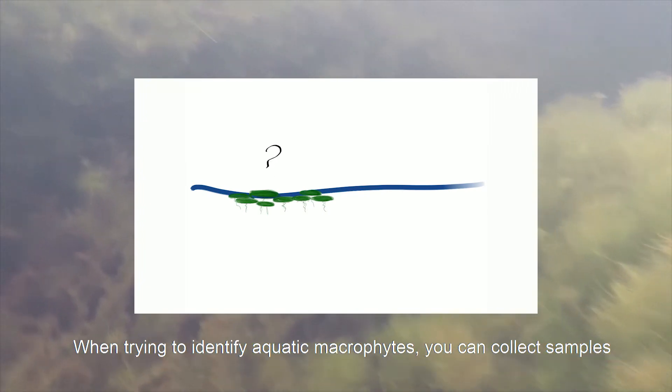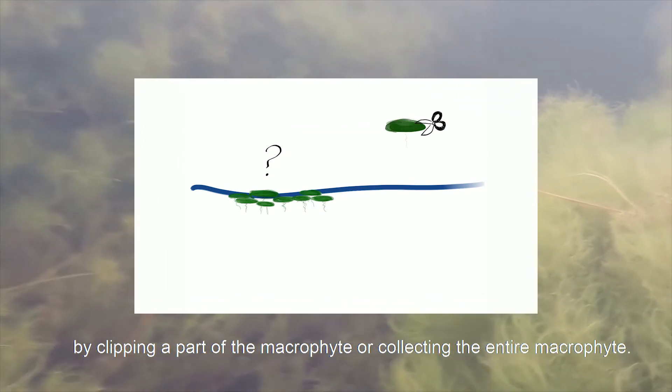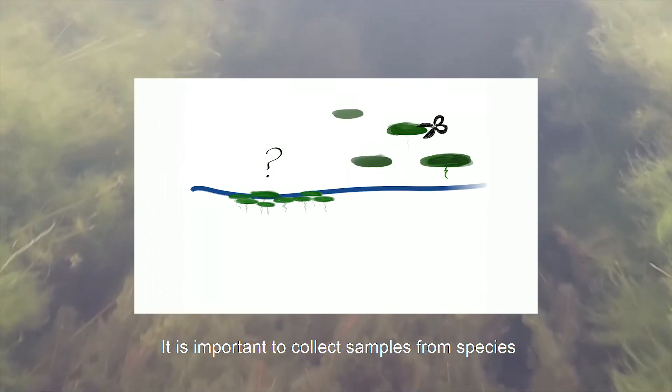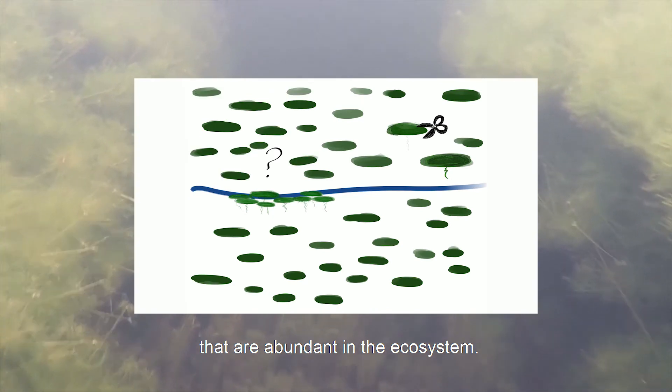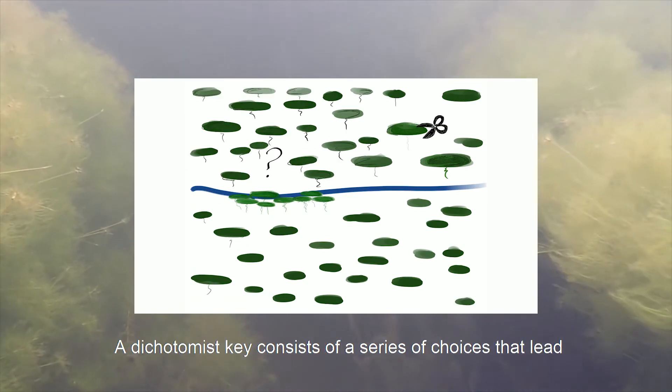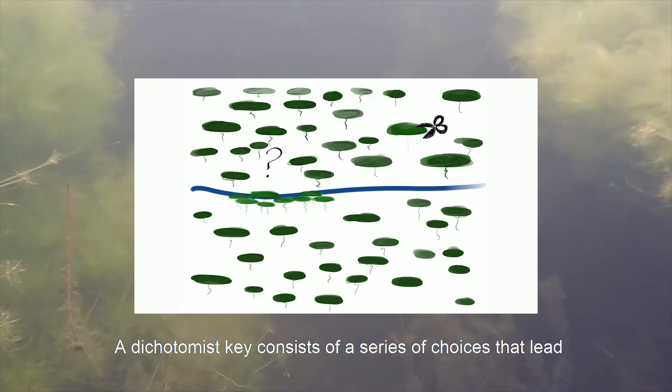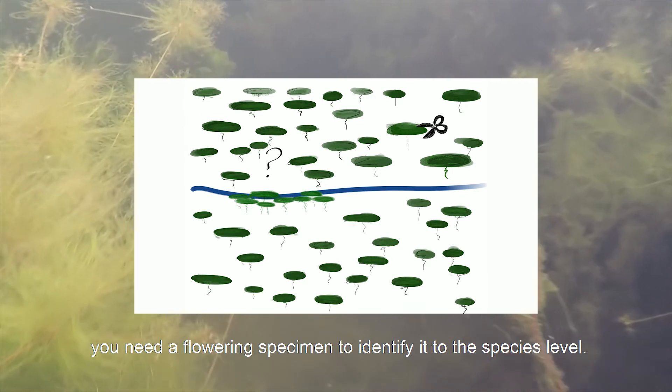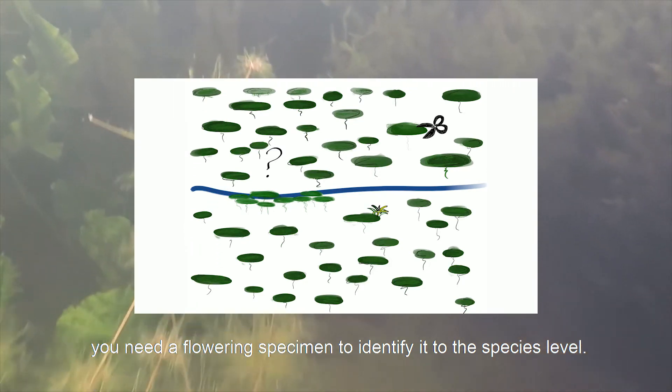When trying to identify aquatic macrophytes you can collect samples by clipping a part of the macrophyte or collecting the entire macrophyte. It is important to collect samples from species that are abundant in the ecosystem. Macrophytes can be identified using a dichotomous key. A dichotomous key consists of a series of choices that lead to the correct species. It is also important to note that you need a flowering specimen to identify it to the species level.